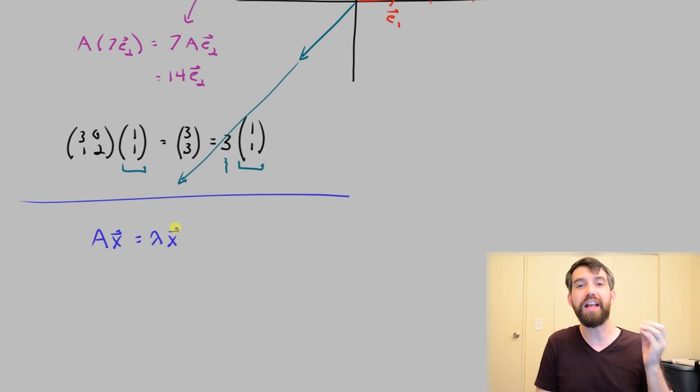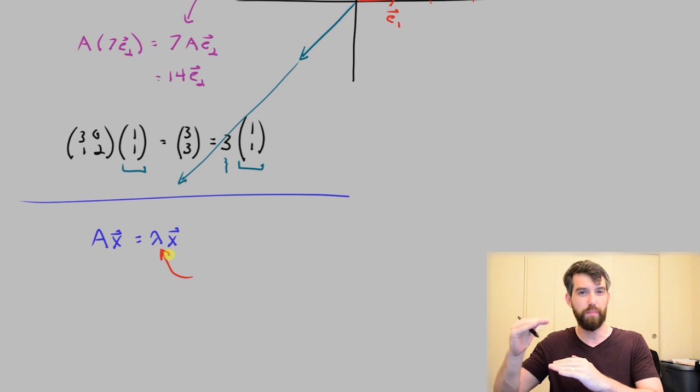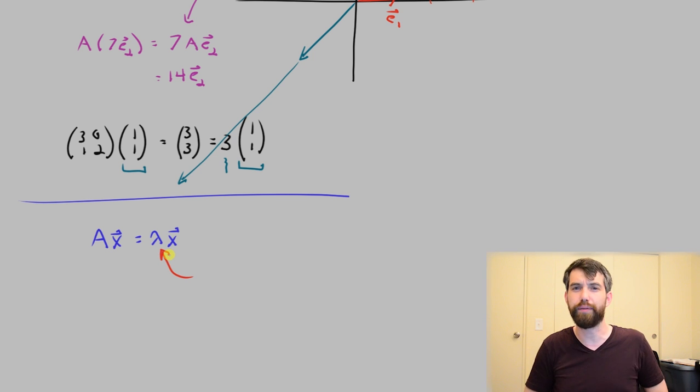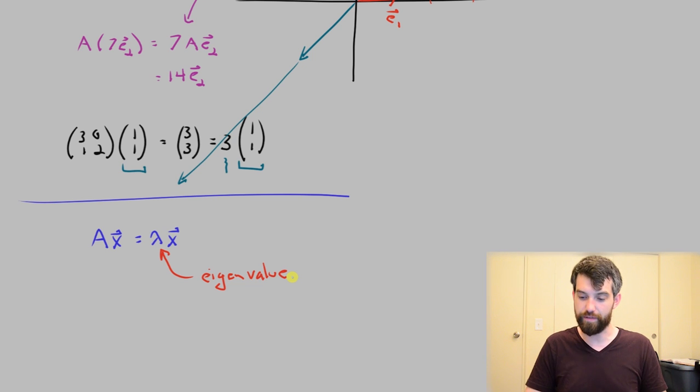This is the so-called eigenvalue eigenvector formula. And what do those terms mean? Well, there's special names for the different components of it. This stretching factor here, this lambda which takes the x and multiplies it by 2 or 3 or some value lambda, is referred to as an eigenvalue. So the eigenvalue you think of as this stretching factor.